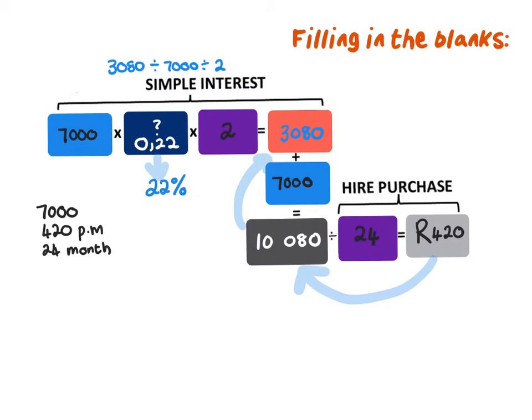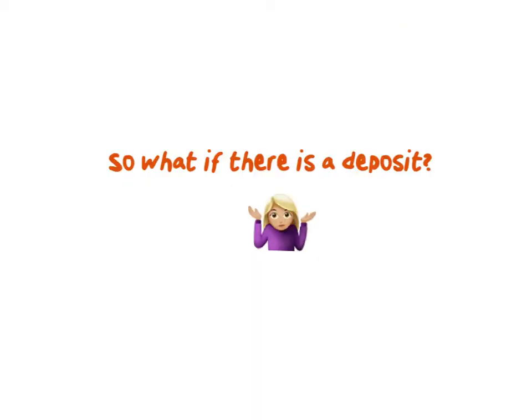So that is hire purchase backwards! Filling in your blocks really makes it so much easier. But what if there is a deposit? In this example there wasn't one and it was fairly easy — how difficult can it get? Let's look at an example.